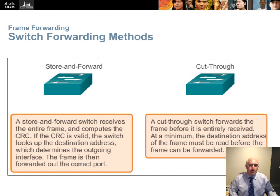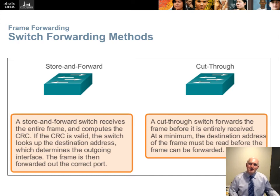Store-and-forward is automatically implemented even if you've selected cut-through when the ingress and egress ports are dissimilar speeds. For cut-through to work, the ingress and egress port must be the same speed — 1 gig to 1 gig, 10 meg to 10 meg. If it's coming in on a 10 meg port and going out on a 100 meg port, you can't use cut-through because you can't move the bits out at the same speed they're coming in. The switch will automatically revert to store-and-forward for those frames even if you've specified cut-through.